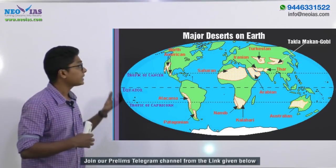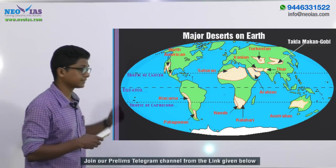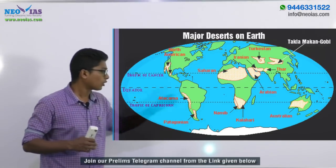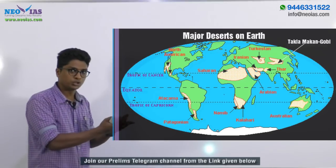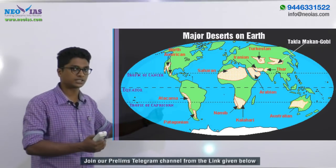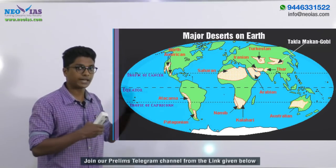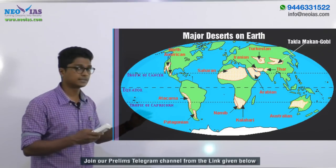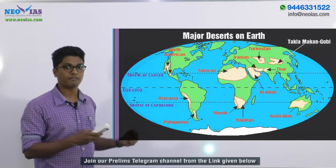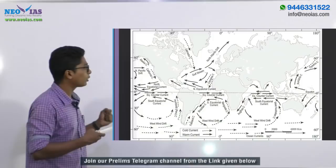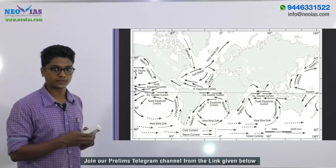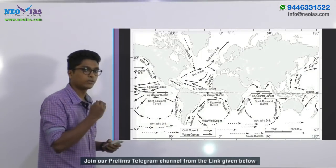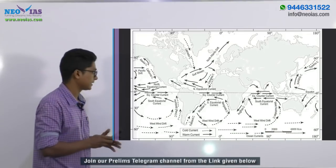Now going through the factors influencing these desert formations — why are they seen near coastal regions? By simple logic, near coastal regions we should have more rainfall, but that's not the case. These deserts are influenced mainly by three factors, one of which is ocean currents. All of these deserts are influenced by cold oceanic currents.